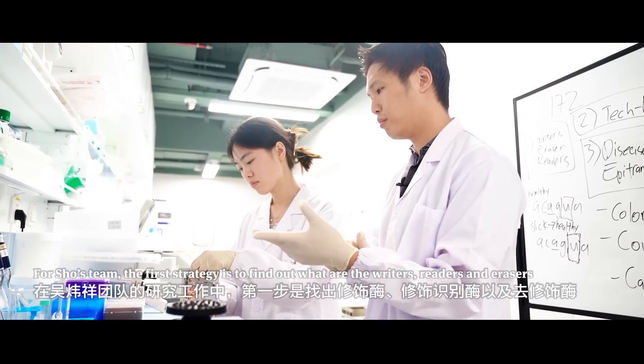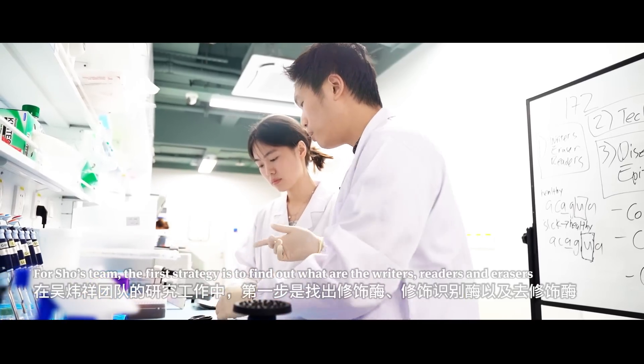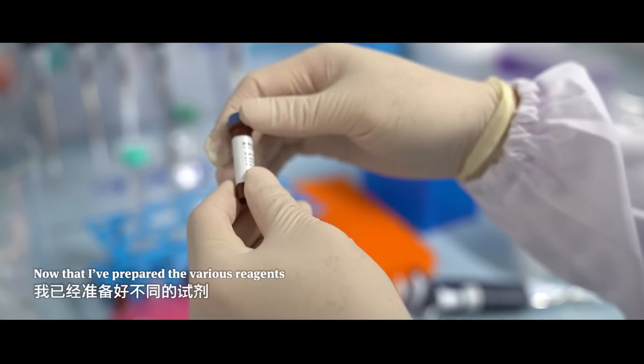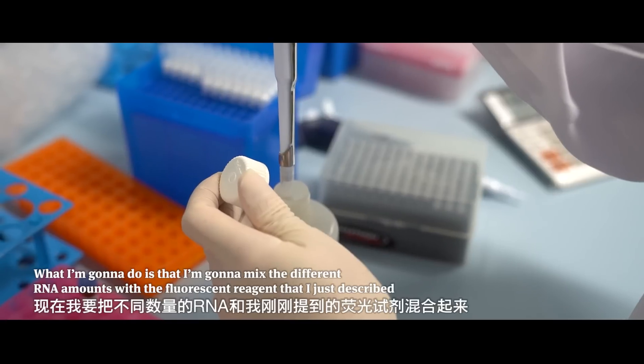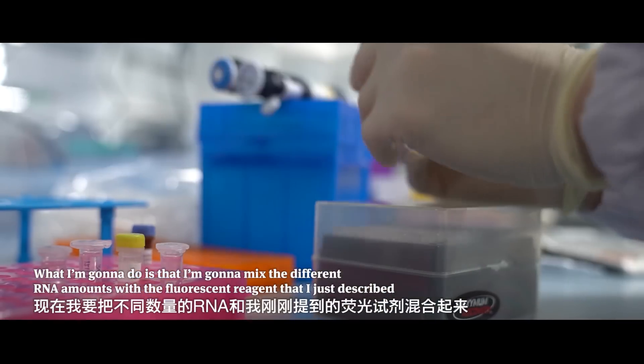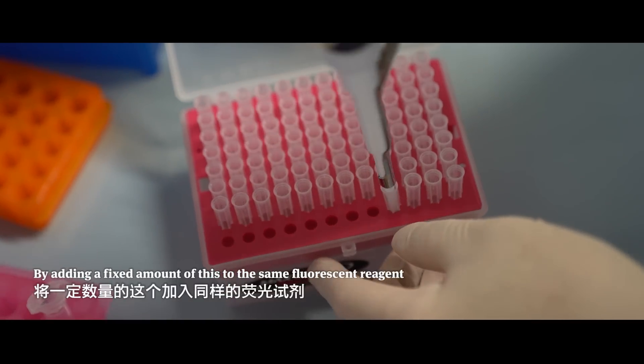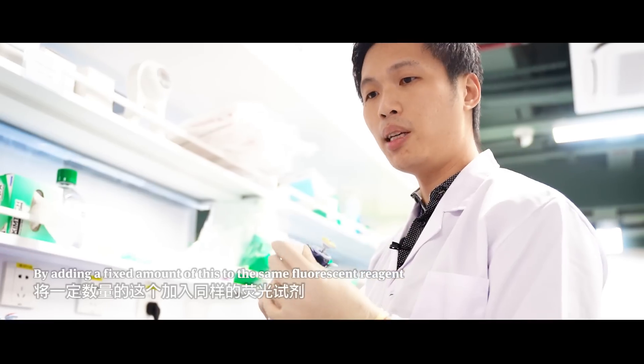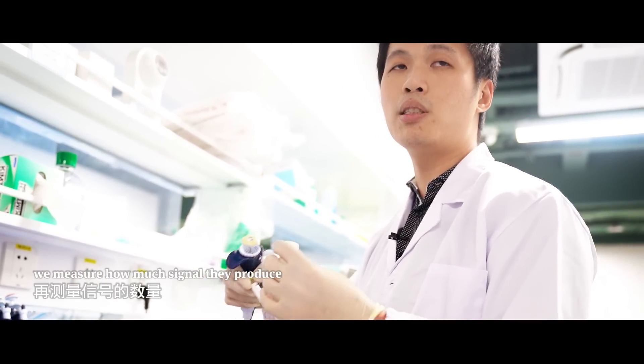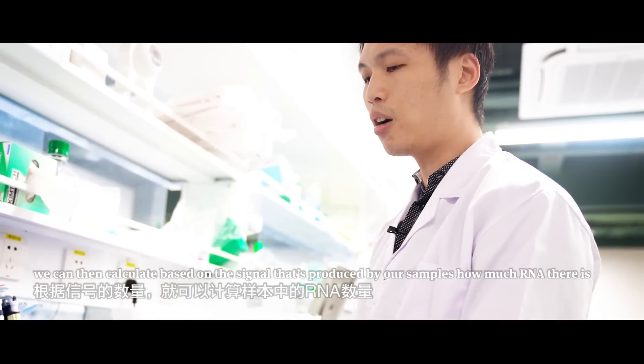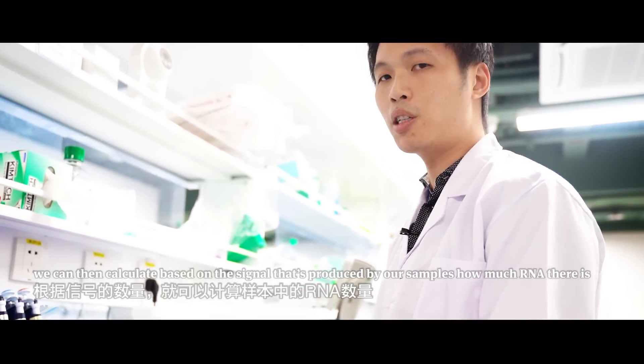For Shou's team, the first strategy is to find out what are the writers, readers, and erasers. Now that I've prepared the various reagents, I'm going to mix the different RNA amounts with the fluorescent reagents that I just described. By adding a fixed amount of these to the same fluorescent reagent, and then we measure how much signal they produce, we can then calculate, based on the signal that's produced by our samples, how much RNA there is.